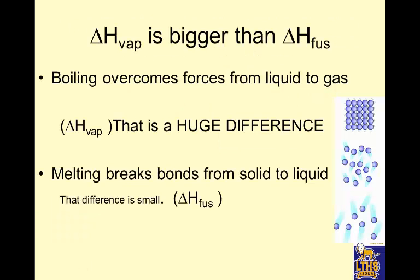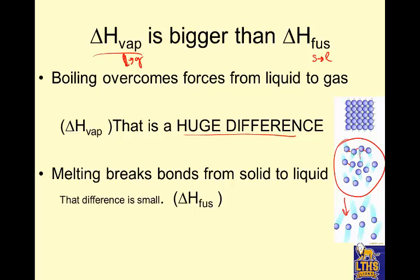Something else you need to know: the delta H of vaporization — a liquid to gas change — is usually bigger than the delta H of fusion. The fusion change is a solid to liquid phase change. So why is this bigger? If you want to turn a liquid into a gas, all of the forces of attraction between these molecules have to be overcome. It takes a lot of energy to make them independent of each other. So the delta H of turning the liquid into the gas is going to be higher, because you have to break all of the bonds that are holding the liquid together.